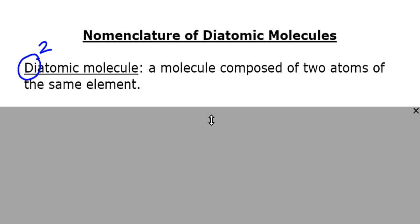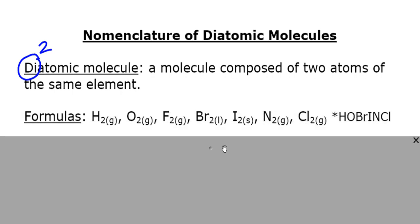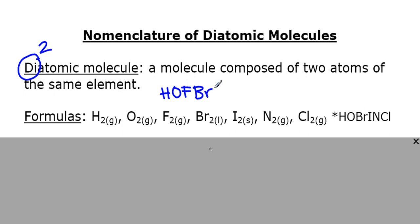The elements that form diatomic molecules are hydrogen, oxygen, fluorine, bromine, iodine, nitrogen, and chlorine — or if you remember the acronym HOFBrINCl, you may have learned that from your grade 10 teacher. Forming diatomic molecules makes them very stable, and that's why they like to be paired up with an atom of the same element.